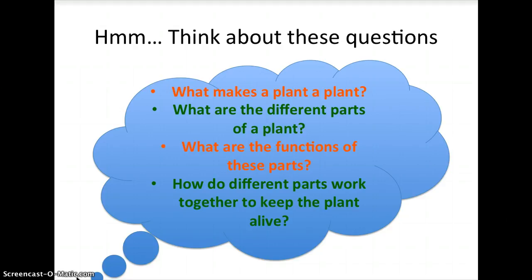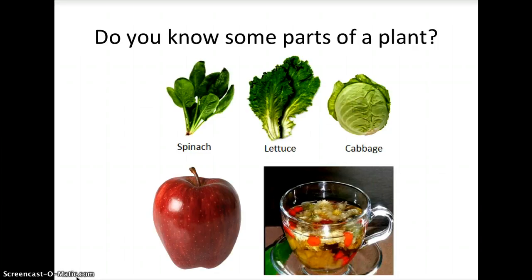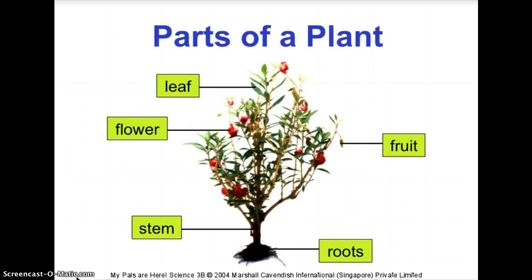In the earlier topic we learned about the different systems in a human body, where different parts work together to keep the organism alive. Likewise, a plant is also a system — different parts working together to keep it alive. The pictures here show parts of a plant that you might have even eaten before.